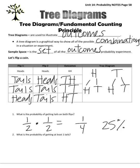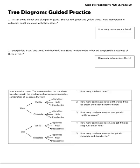The probability of getting at least 1 tails, that would kind of vary based on what your experiment looked like. All right, so Kirsten owns a pair of black and blue jeans. She has red, green, and yellow shirts. How many possible outcomes could she make with those?